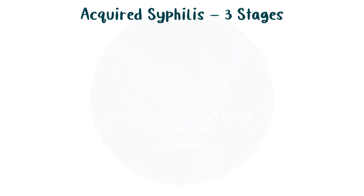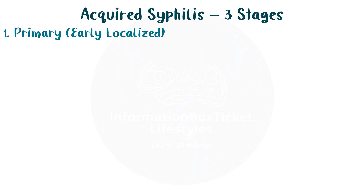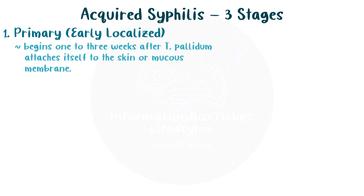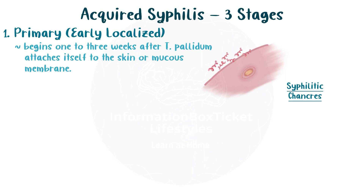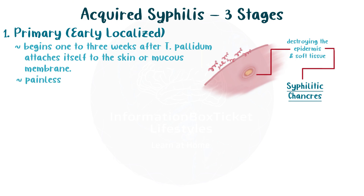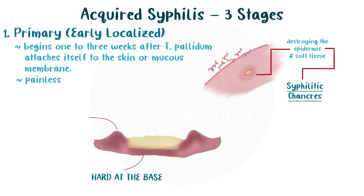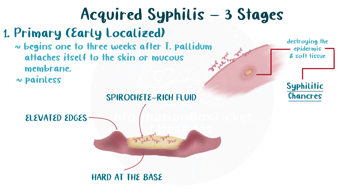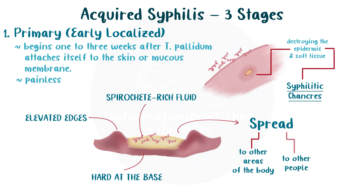The infection in acquired syphilis progresses through three phases. The first stage, known as the early localized stage or primary syphilis, often begins one to three weeks after T. pallidum attaches itself to the skin or mucous membrane. Syphilitic chancres, or ulcers, develop as a result of the spirochetes destroying the epidermis and soft tissue wherever they enter the body. A syphilitic chancre is painless. These chancres are hard at the base, have elevated edges, and are often coated with a spirochete-rich fluid that can spread to other areas of the body and to other people.